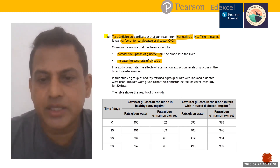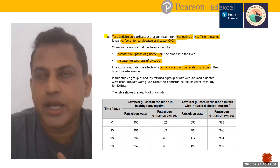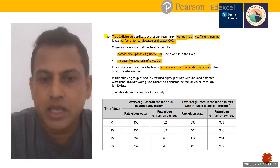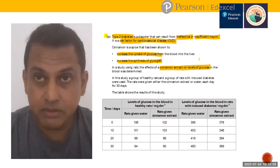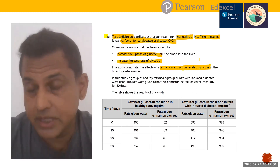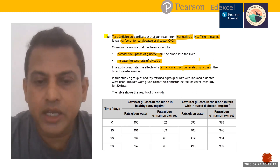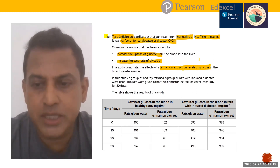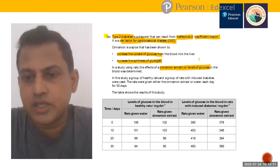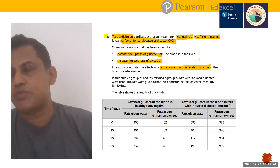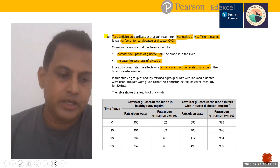In a study using rats, the effects of cinnamon extract on the level of glucose in the blood were determined. Cinnamon is a spice with beneficial health effects when consumed on a daily basis. In this study, one group of healthy rats and one group of rats with induced diabetes were used. One group was given water and the other group was given cinnamon extract.